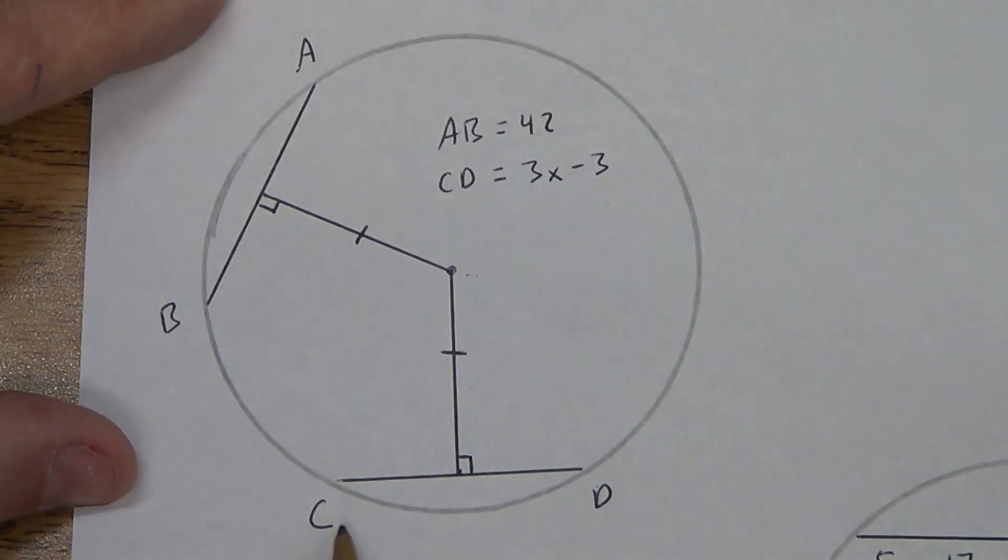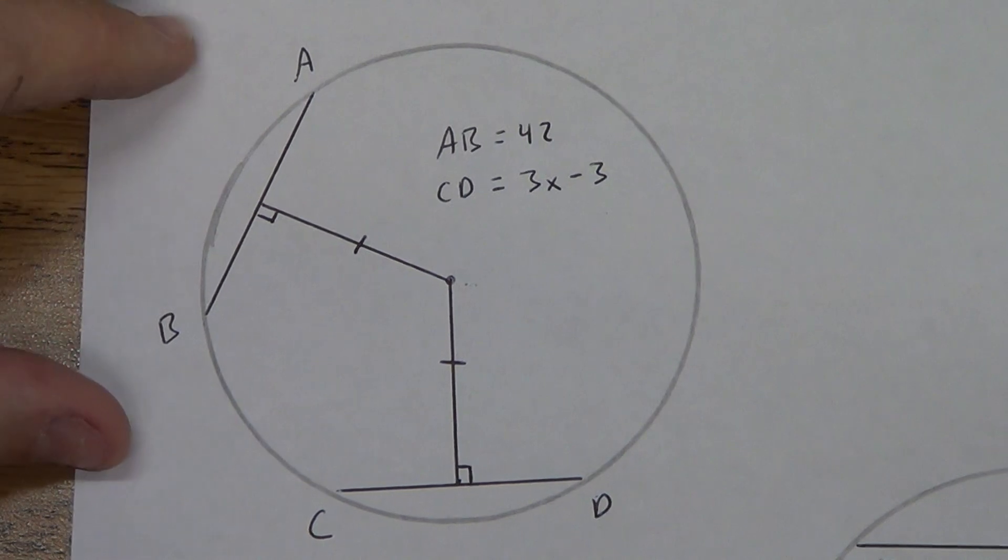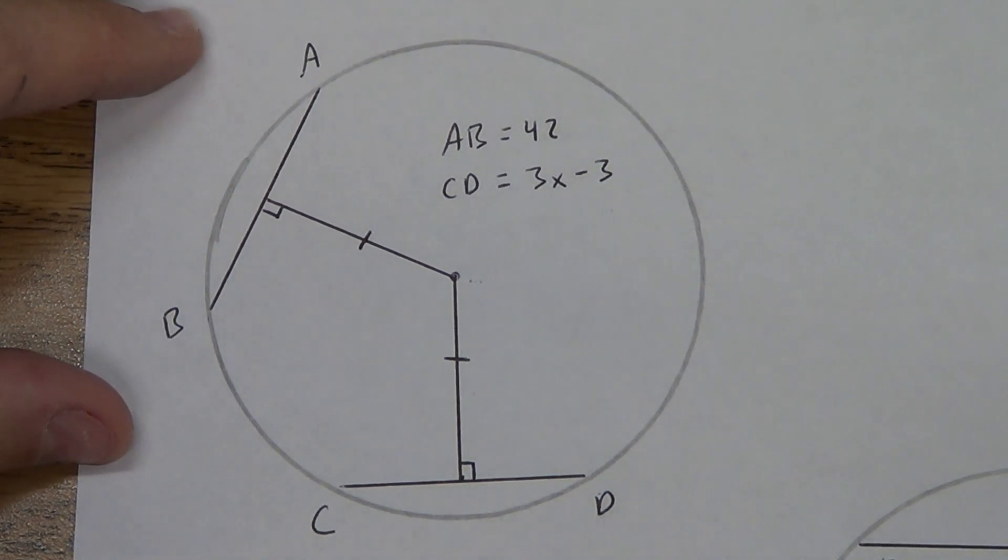So we know that chord AB and chord CD are the same perpendicular distance from the center point. That should sound like a theorem that we learned back in the first video for lesson 3. And we know that if two chords are the same perpendicular distance from the center point, then those chords have to be congruent to each other.